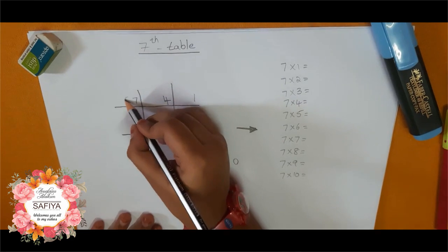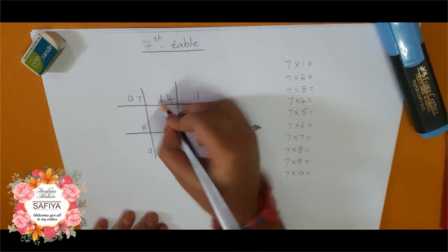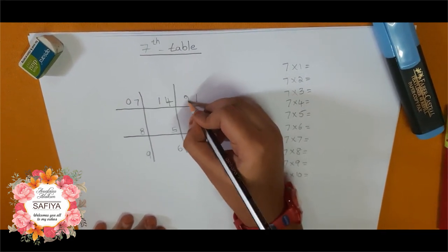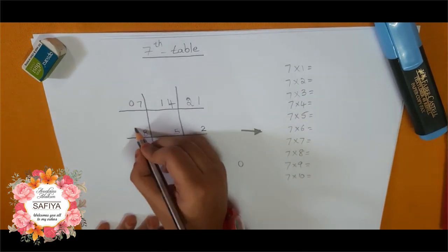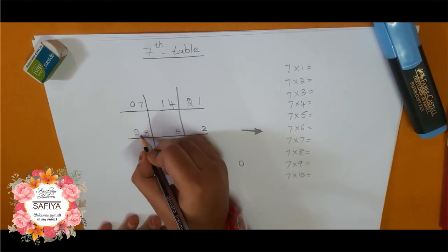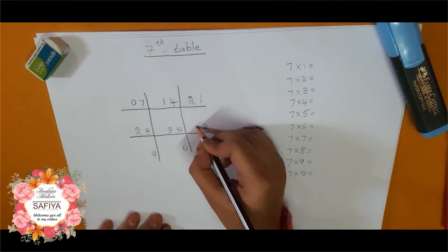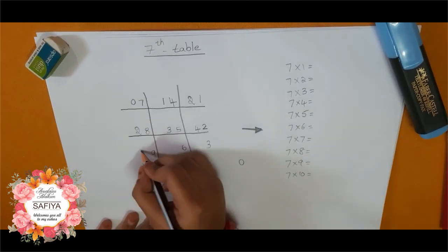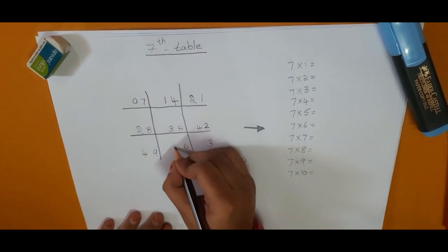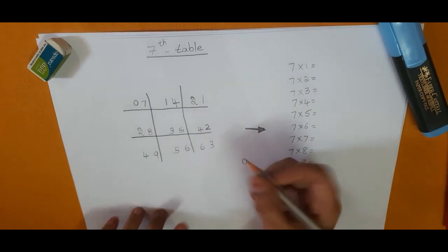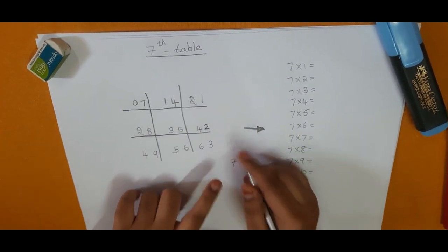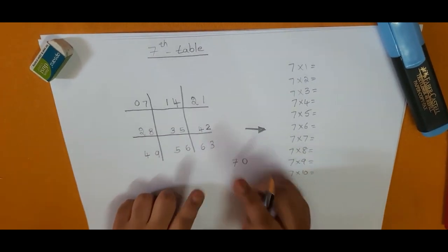Now start with here: zero, one, two, again two, three, four, again four, five, six, and seven. Okay, how do you understand seven table?